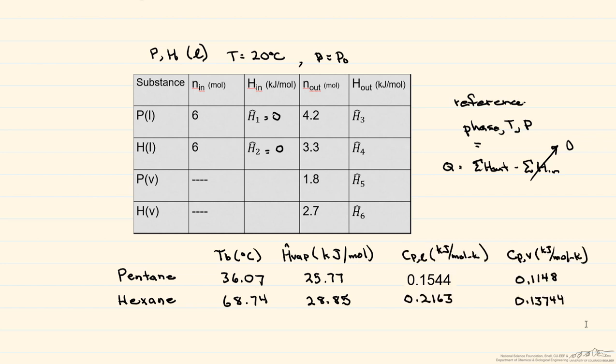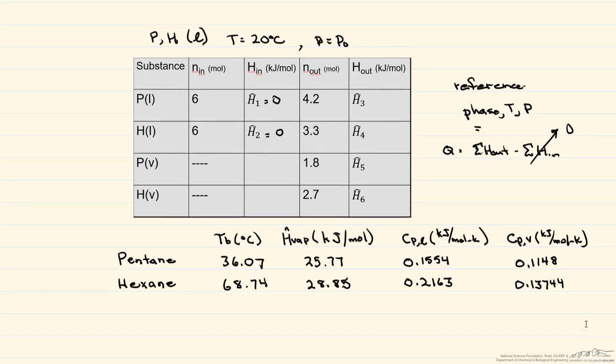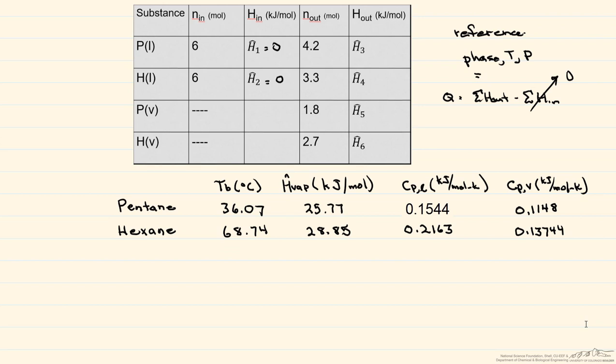So let's calculate our enthalpies. Again, H1 and H2 are zero. And we'll start with the liquid enthalpy since our reference state is liquid, and we'll therefore only need to calculate the sensible heats. And that's for H3 and H4. So how do we get that sensible heat? Well, our H hat is equal to the integral from our T reference to our T final, C sub P DT.